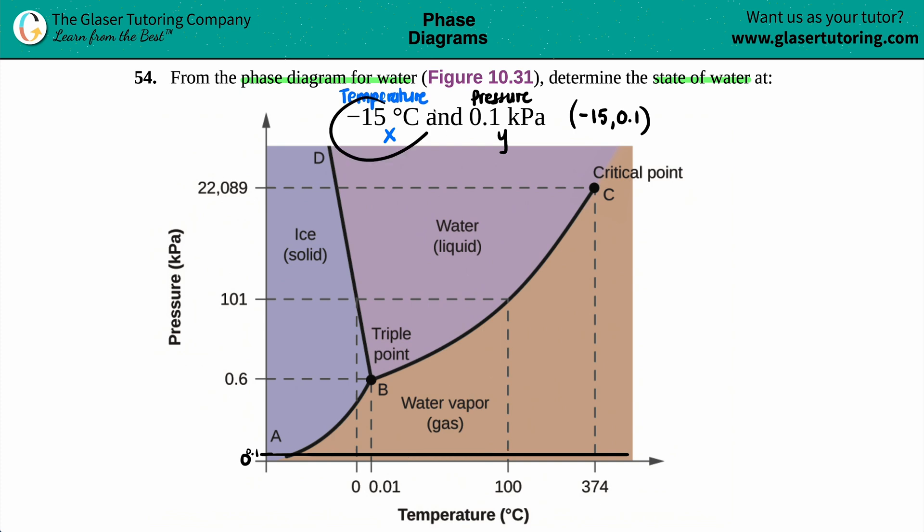Now we just have to see where negative 15 is. Well, here's zero. And if we just go by the jump between zero to 100, probably negative 15 would be somewhere in maybe this area, negative 15, closely about.